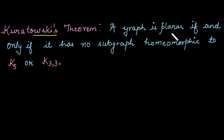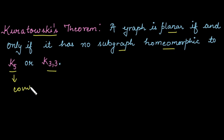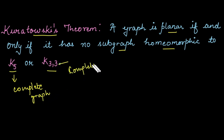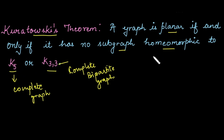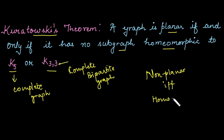Next is Kuratowski's theorem. According to Kuratowski's theorem, a graph is planar if and only if it has no subgraph that is homeomorphic to K5 or K3,3. K5 means it is a complete graph with five vertices, whereas K3,3 represents the complete bipartite graph. The graph is planar if there does not exist any subgraph homeomorphic to K5 or K3,3, or equivalently, the graph is non-planar if and only if it has a subgraph homeomorphic to K5 or K3,3.